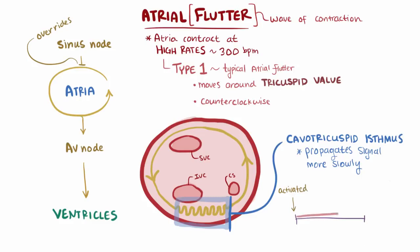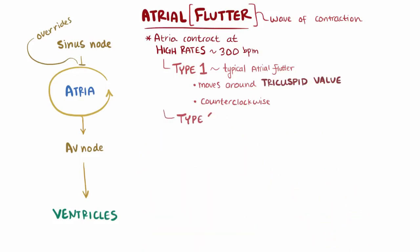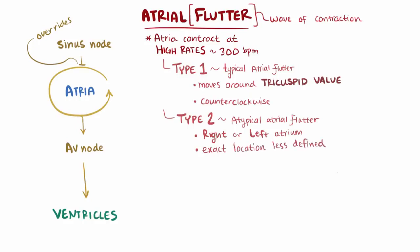Tissue that was just activated can't be activated again until a certain amount of time has passed, which is called the refractory period. So that slow propagation through the isthmus gives the tissue enough time to be out of refractory, and therefore the circuit can loop back on itself. Type 2, or atypical atrial flutter, is where a re-entrant circuit develops in either the right or the left atrium, but the exact location is less clearly defined. Again, we've got a similar setup, where a wave of activated tissue, or depolarization, hits a bit of tissue in such a way that it creates a loop of depolarization that keeps going around and around.